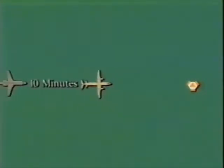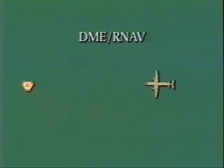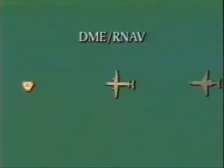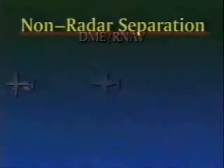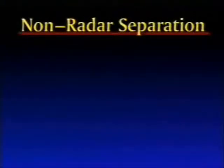For example, aircraft on the same, converging, or crossing courses which are traveling at the same speed and altitude must be separated by 10 minutes regardless of the distance. However, if these aircraft are both using distance measuring equipment called DME and/or area navigation equipment, commonly known as RNAV, the minimum separation is 20 nautical miles. This video presentation will focus on non-radar separation and procedures.